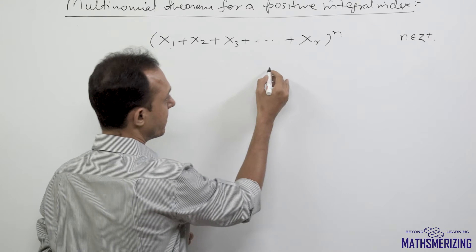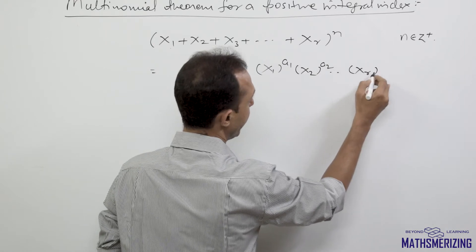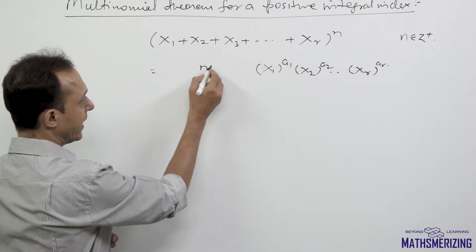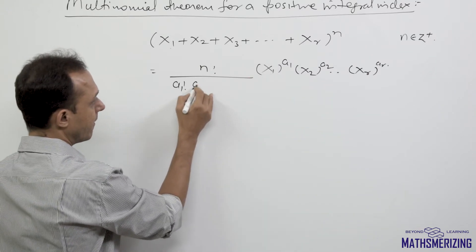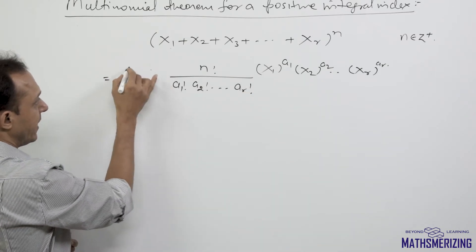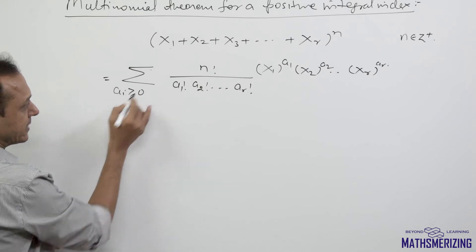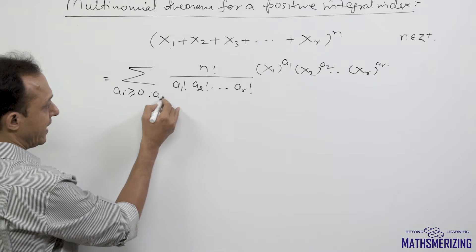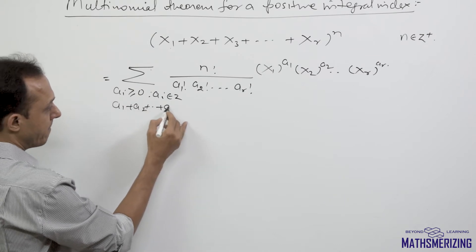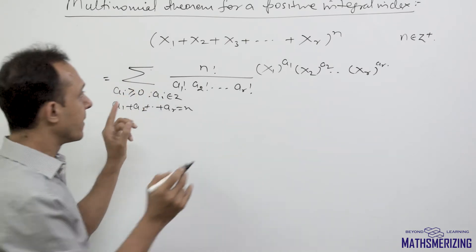A general expansion for the multinomial theorem is expressed as x1 to the power a1, x2 to the power a2, up to xr to the power ar. The coefficient of this term is written as n factorial divided by a1 factorial times a2 factorial times ar factorial. This is expressed as a summation over all terms where each ai is greater than or equal to zero, ai is an integer, and a1 plus a2 plus ar equals n.